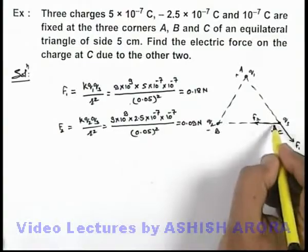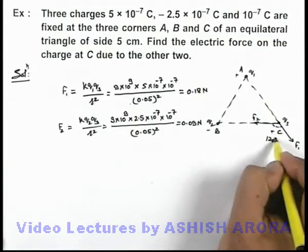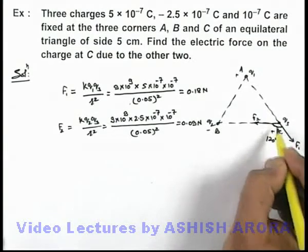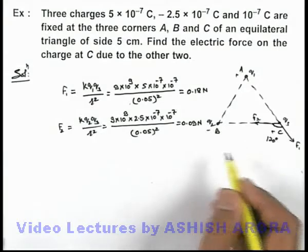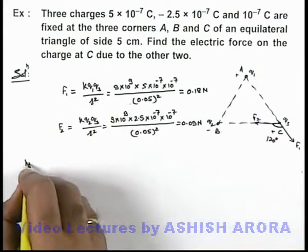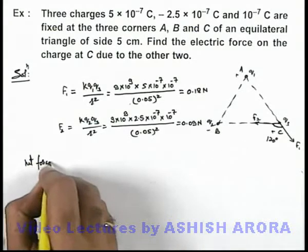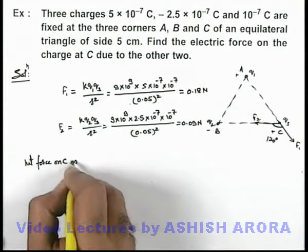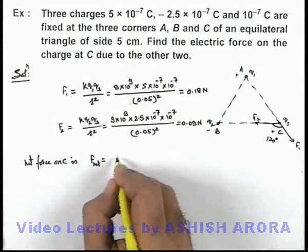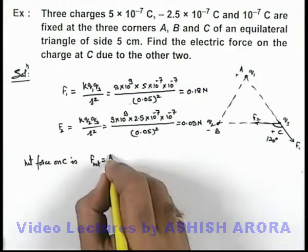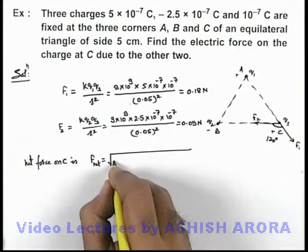As these two forces are acting at an angle of 120 degrees, we can use vector summation of these two forces to find the net force. So we can calculate net force on C—this F_net—we can calculate by using parallelogram law of vector addition.